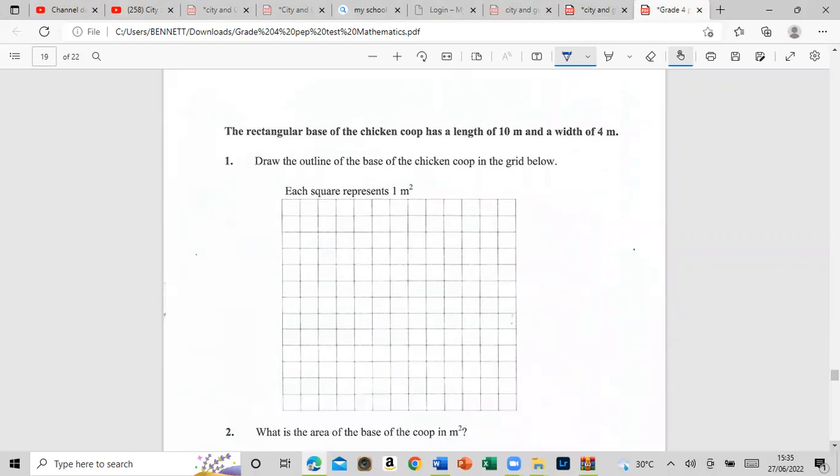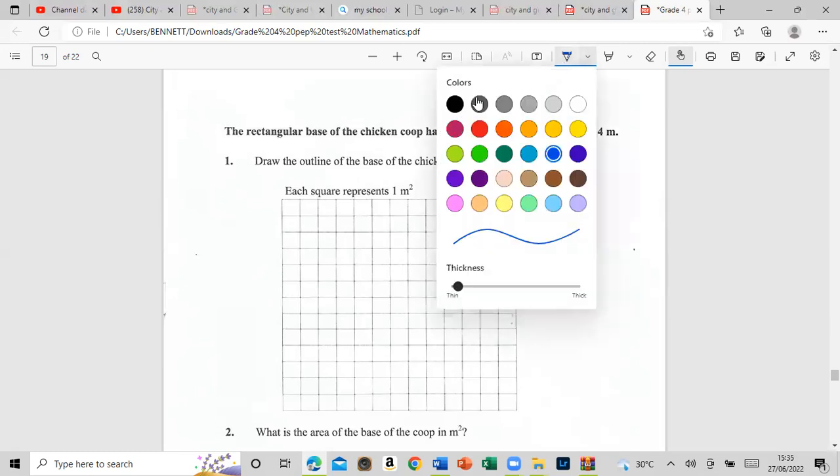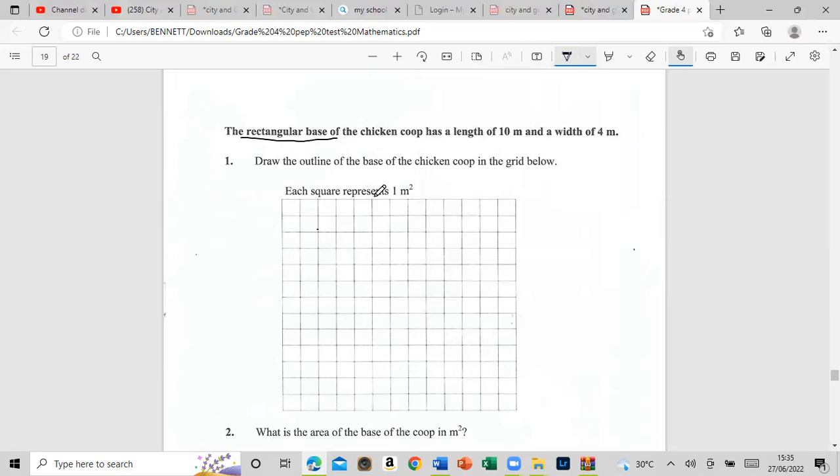The rectangular base of the chicken coop has a length of 10 meters and a width of 4 meters. So the first thing you want to do is draw the coop. Notice they say it's a rectangular base. Let's count: one, two, three, four, five, six, seven, eight, nine, ten. We stop here. Width is four: one, two, three, four. I'm going to put my ruler here, trying to make it as straight as possible. This is the measurement: it is 4 meters width and the length is 10 meters.